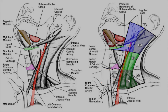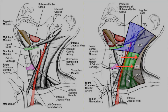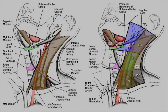Level 5 is the posterior triangle of the neck and is separated into levels 5a and 5b by another horizontal line at the bottom of the cricoid cartilage, which is the same border between levels 3 and 4. The anterior border of level 5a is the sternocleidomastoid muscle, and for level 5b it is either the sternocleidomastoid or the anterior scalene muscle. The posterior border of level 5 is the trapezius muscle, and the inferior border is the clavicle.